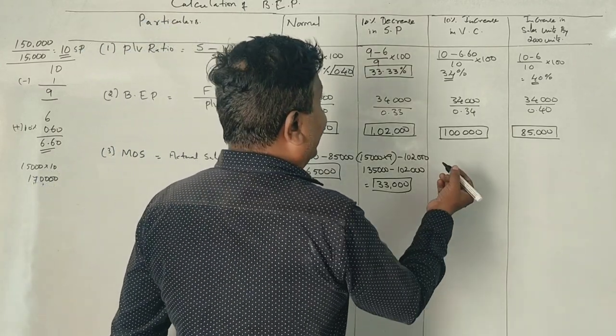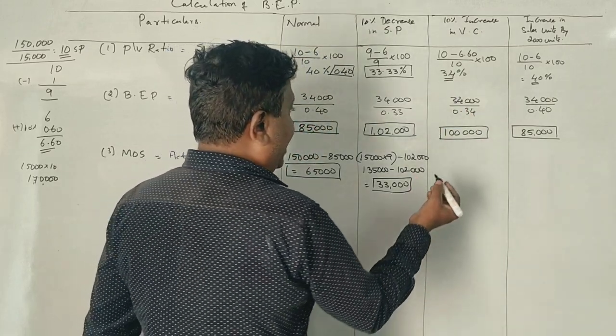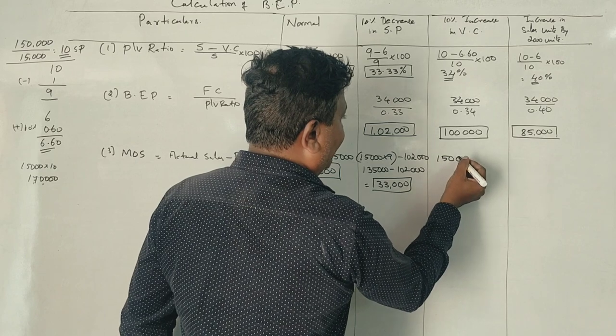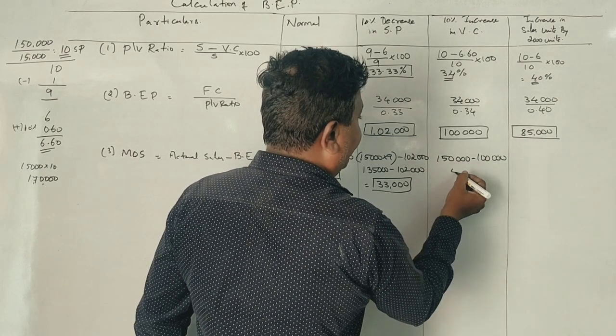Next case: when variable cost increases, the actual sales remain 1,50,000. Break-even is 1,00,000. The margin of safety is 50,000.